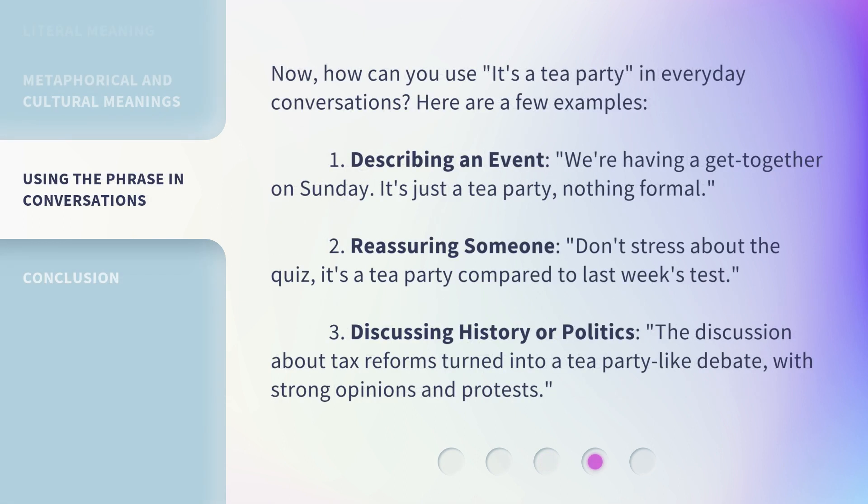Now, how can you use 'it's a tea party' in everyday conversations? Here are a few examples. 1. Describing an event: 'We're having a get-together on Sunday. It's just a tea party, nothing formal.' 2. Reassuring someone: 'Don't stress about the quiz. It's a tea party compared to last week's test.' 3. Discussing history or politics: 'The discussion about tax reforms turned into a tea party-like debate, with strong opinions and protests.'